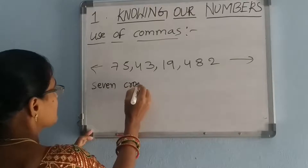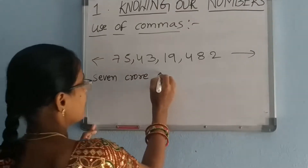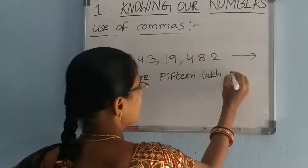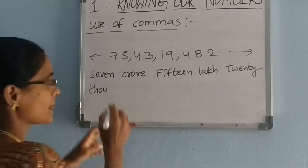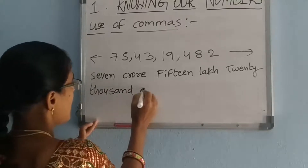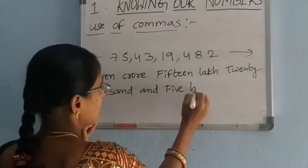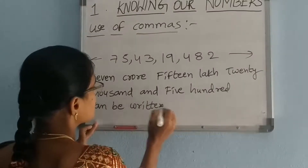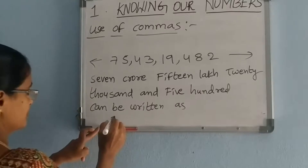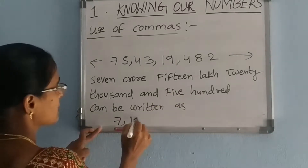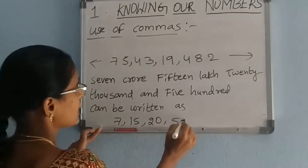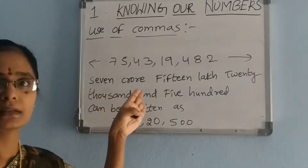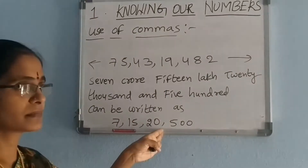For example: 7 crores, 15 lakhs, 20,000, 500 can be written as 7,15,20,500 — with commas separating crores, lakhs, thousands, and hundreds. Commas help us in reading and writing larger numbers easily.